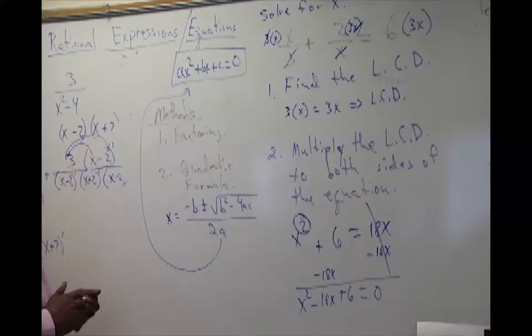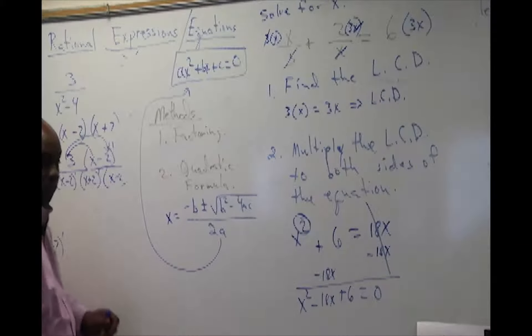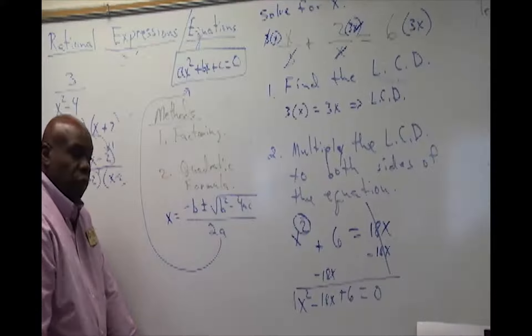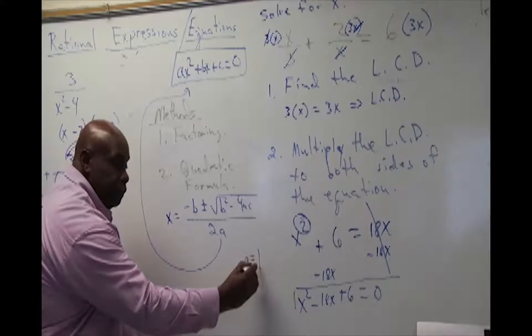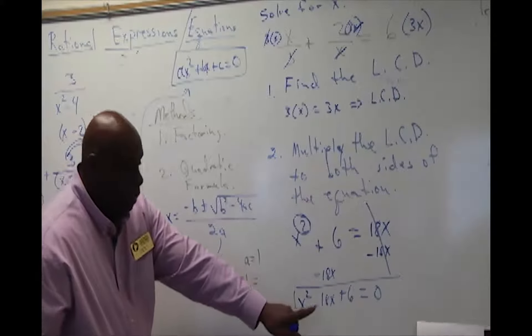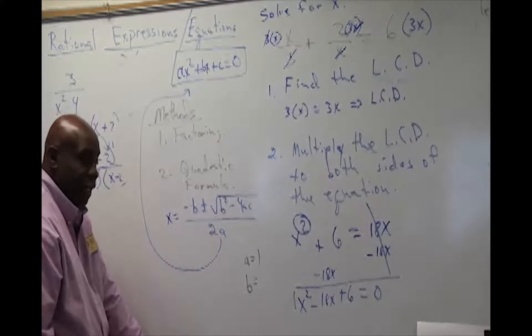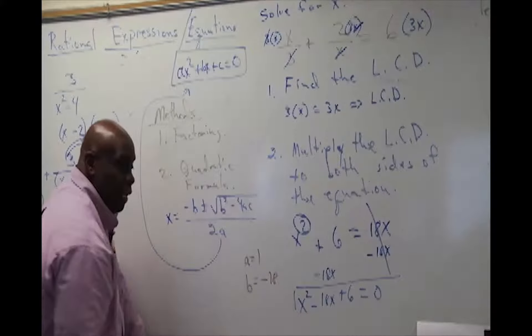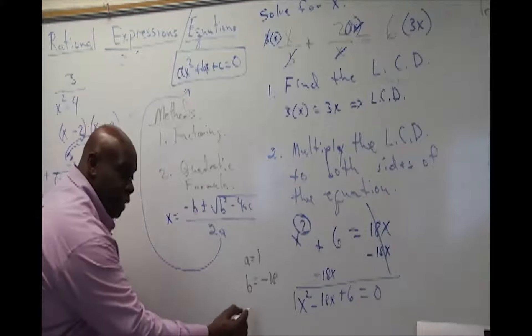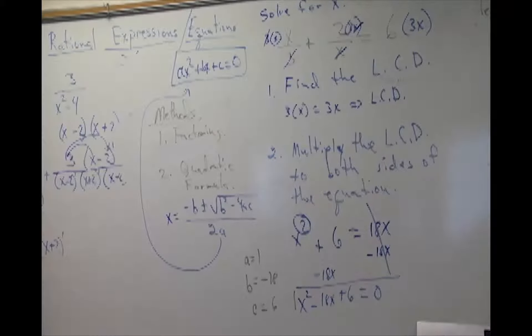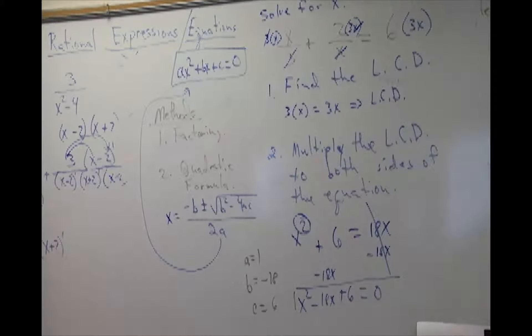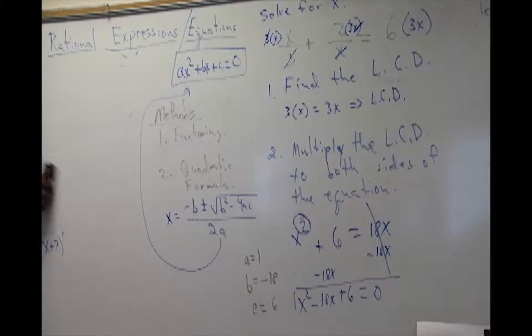So if we look at the equation that we have before us, the coefficient of that x squared term is 1, so that means that a is equal to 1. B is the middle coefficient, and that is negative 18. And then c will be your constant, and that will be 6. So we have a, b, and c, which is sequentially placed, and all we need to do is put that into our quadratic formula and then simplify.